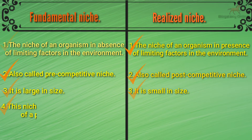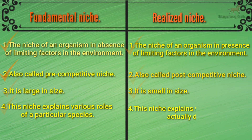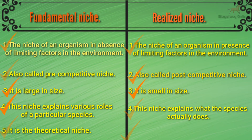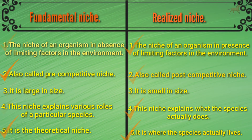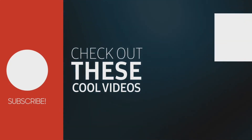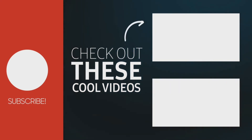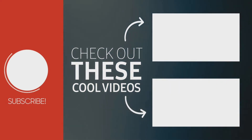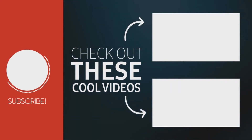Fundamental niche explains the various potential roles of a particular species, while realized niche explains what the species actually does. So fundamental niche is a theoretical niche, and realized niche is where the species actually lives. Thanks for visiting Bio Galaxy Online — hope you liked the video, please share and subscribe.